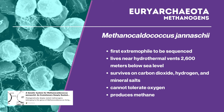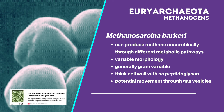Methanococcus jannaschii is the first extremophile to be sequenced. They live near hydrothermal vents 2,600 meters below sea level where temperatures approach the boiling point of water and pressure is sufficient to crush an ordinary submarine. They survive on carbon dioxide, hydrogen, and mineral salts, cannot tolerate oxygen, and produce methane for energy. Methanococcus jannaschii can produce methane anaerobically through different metabolic pathways. When grown in freshwater medium, they form large multicellular aggregates; in marine environments, they grow as single irregular cocci surrounded by an S-layer. They have a thick cell wall but no peptidoglycan, and have potential movement through gas vesicles produced in the presence of hydrogen and carbon dioxide.